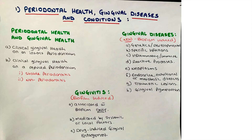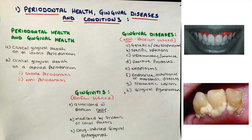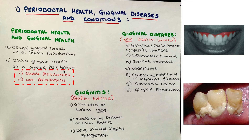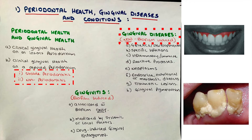The first green heading: periodontal health and gingival diseases and conditions. Under the subheading of periodontal health and gingival health, there are two subtopics. Letter A is clinical gingival health on an intact periodontium — intact means never been affected by periodontitis or gingivitis. Letter B is clinical gingival health on a reduced periodontium. Reduced periodontium can be due to two reasons: stable periodontitis, meaning the patient has had periodontitis but has been treated and is now stable; or non-periodontitis, meaning a surgical procedure such as crown lengthening reduced the periodontium, but the gingiva is still healthy.